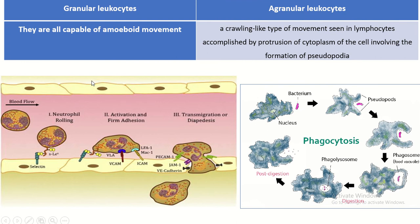The granular leucocytes are all capable of amoeboid movement. In agranular leucocytes, a crawling-like type of movement is seen in lymphocytes, accompanied by protrusions of the cytoplasm involving the formation of pseudopodia. This is the pseudopodia.